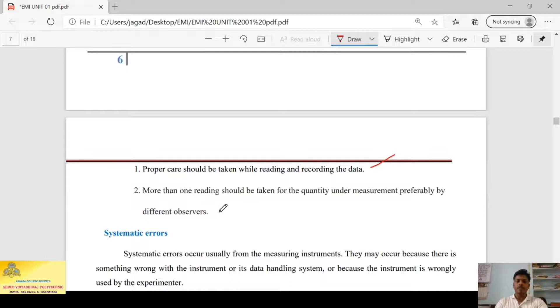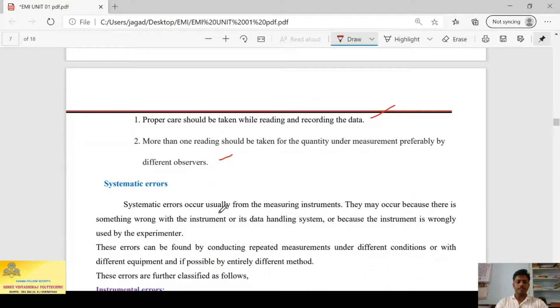This can be avoided. Proper care should be taken while reading and recording data. And more than one reading should be taken for a quantity under measurement, preferably by different observers. When you are reading, you better see twice or thrice while taking the measurement, or you can have 2 or 3 people for reading the measurement value.